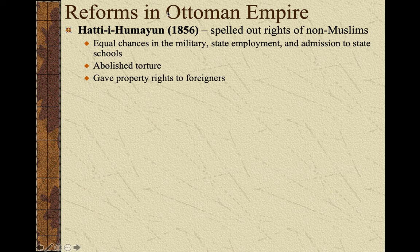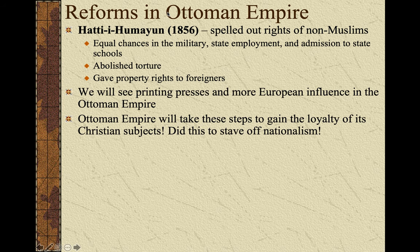We're also going to see the Hatt-i Humayun, which is going to spell out rights for non-Muslims. We're going to see equal chances for non-Muslims and Muslims within the military, state employment, and admission to state schools. We're going to see the abolishment of torture — definitely Enlightenment influence right there — giving property rights to foreigners, and more printing presses within the Ottoman Empire. As we can tell, more European influence within the Ottoman Empire. The Ottoman Empire did this for a couple of reasons: number one was to gain the loyalty of Christian subjects, as there are Christian and Jewish subjects within the Ottoman Empire.